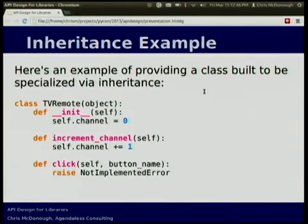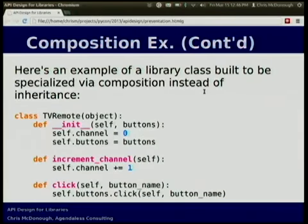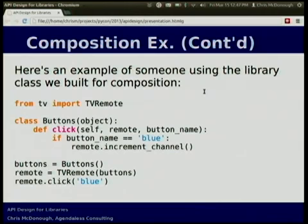Here's an example of inheritance: we have a class with a click method and an increment channel method — the click method does nothing. When we use it, we can override the click method and call increment channel if the button name is blue. Here's the composition equivalent: instead of subclassing the TV remote thing, we pass in a buttons object to its constructor. The buttons object is responsible for having its click method called — the TV remote passes itself to the buttons object's click method along with the button name. We make a buttons object instead of inheriting from the TV remote class, and pass an instance of it in. It's another layer of indirection — that's basically what composition is.